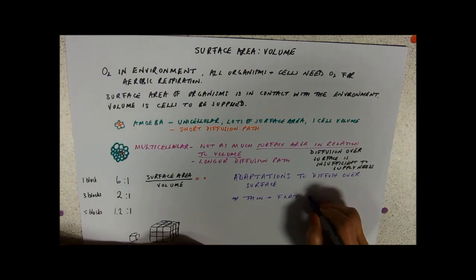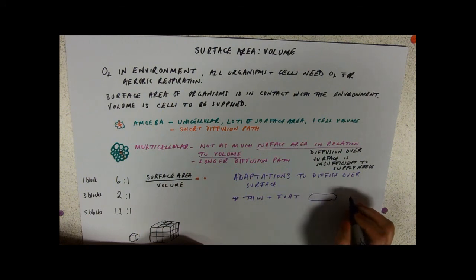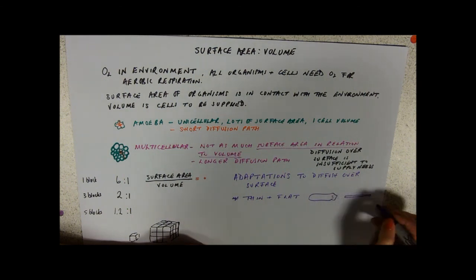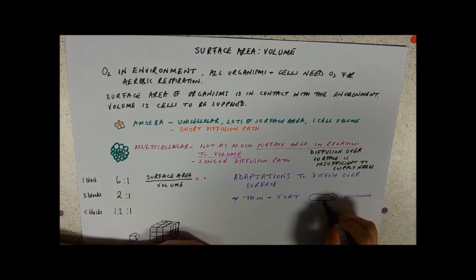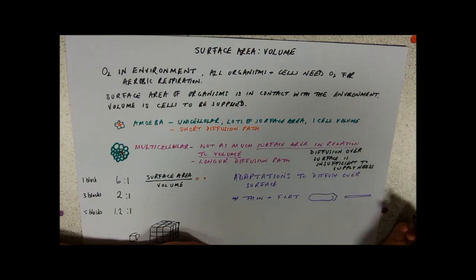So you can be thin and flat. My lovely example is the flatworm. It's one of my favourite mini-beasts. They're kind of shaped like that. I've got two little eyes at the front. If you look at them side-on, they're called flatworms because they're really flat. So big surface area, very short diffusion path all the way to the centre of the organism.